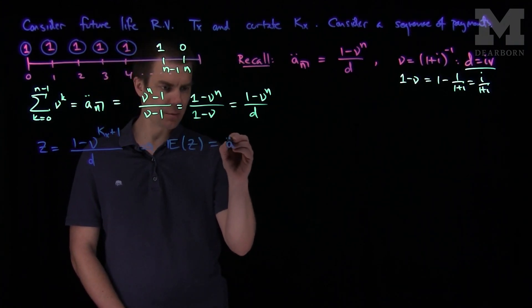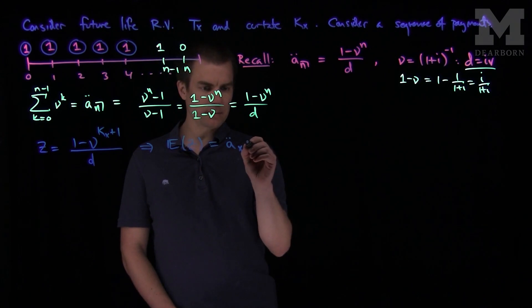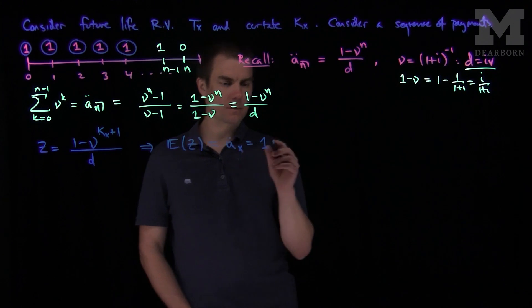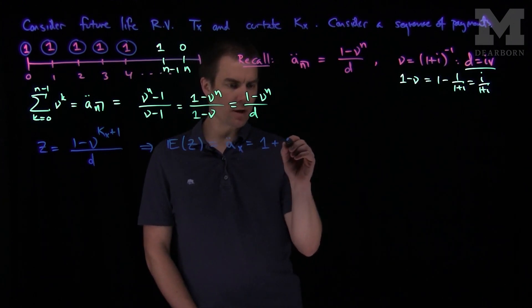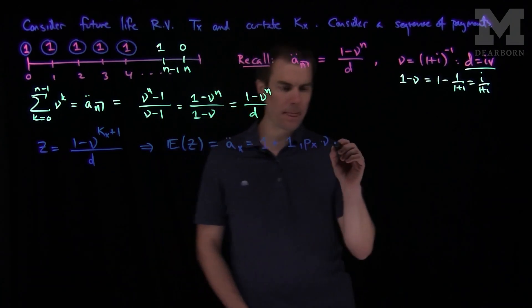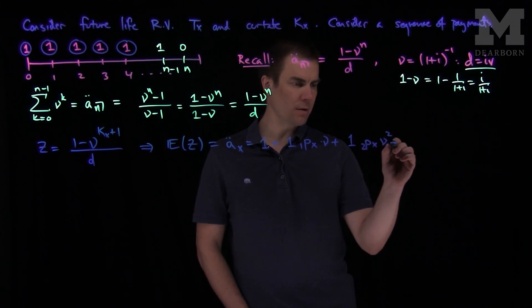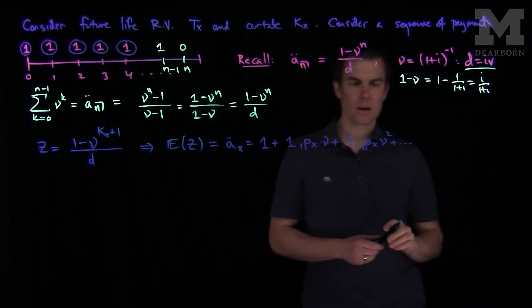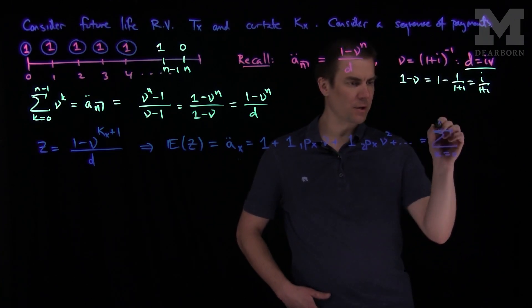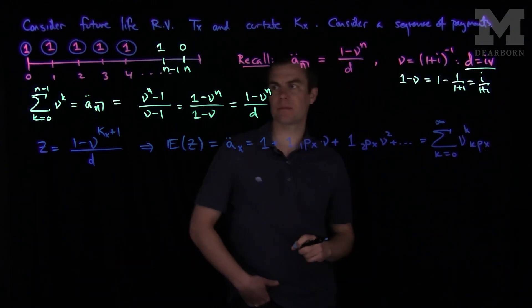So the expected present value of this is a double dot of x. And now we can write down a formula for what this will be. This will simply be, the first payment comes automatically, then the second payment of 1 comes provided that you have survived to that year with a discount factor of nu, plus 1 times the probability that you have survived 2 years, nu squared, etc. And so if we sum this up, we get the sum, K goes from 0 to infinity, nu to the k, K Px. That is the present value of this stream of annuities.